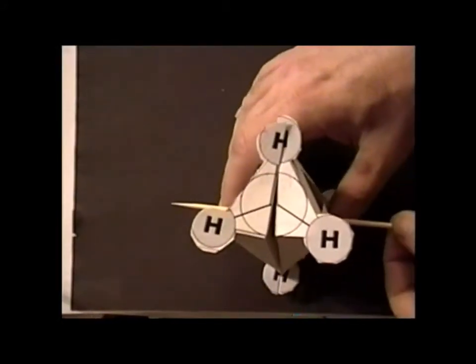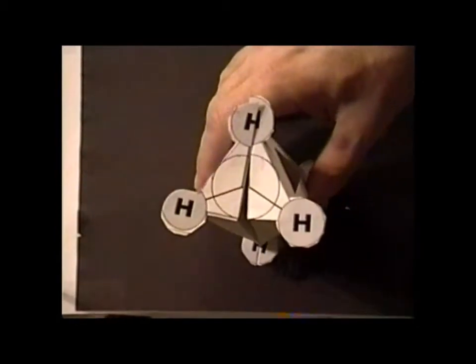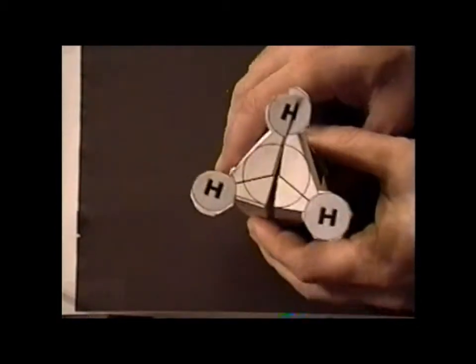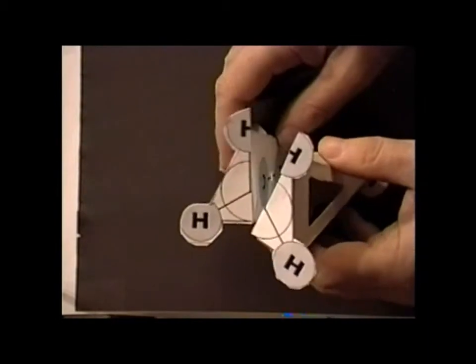When we assemble the model, we can remove the skewer that we're using for the C2 axis. And we notice that it models very nicely one of the vertical mirrors.